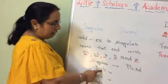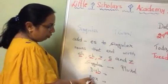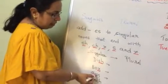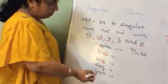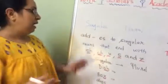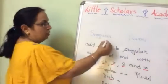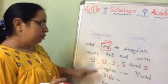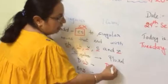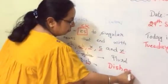For example: d-i-s-h — dish; b-o-x — box; g-l-a-s-s — glass; l-u-n-c-h — lunch. Abhi is mein kya hota hai, we have to put e-s — not just s. Dish, toh hum kaise is ko plural mein change karenge? We will write d-i-s-h-e-s — dishes. Similarly, box ka plural kya hoga? B-o-x-e-s — boxes.